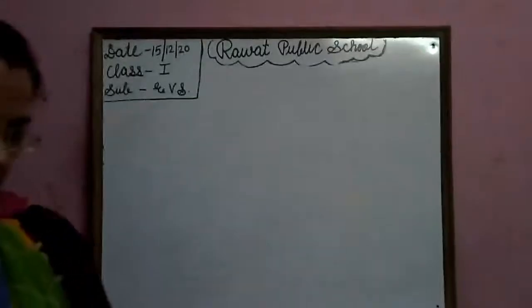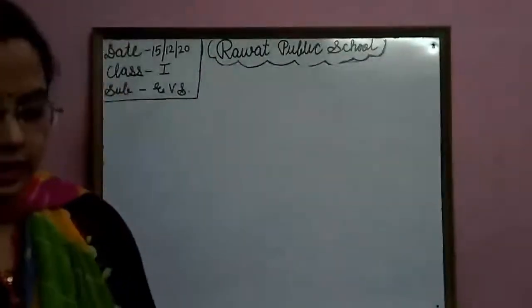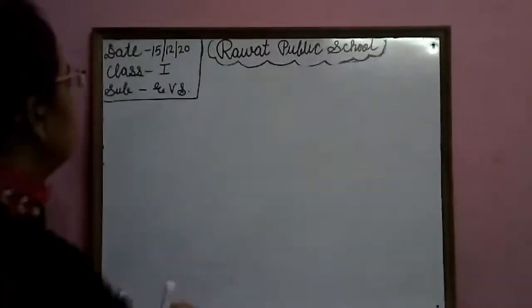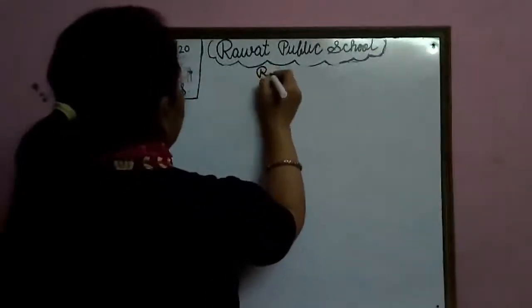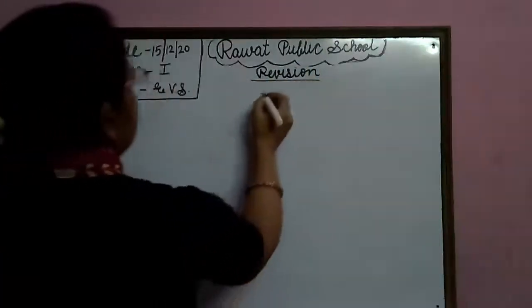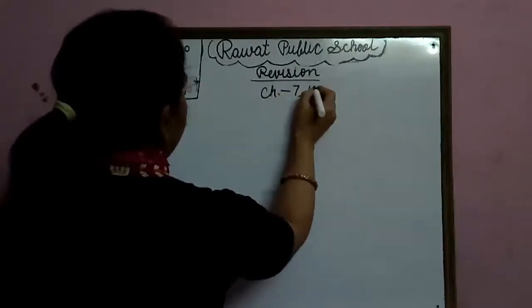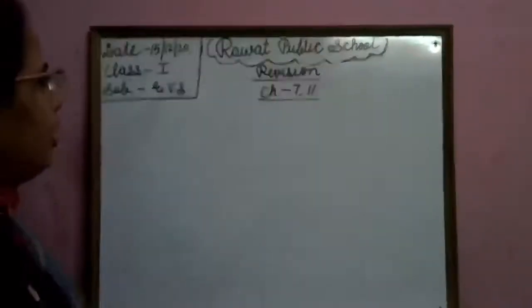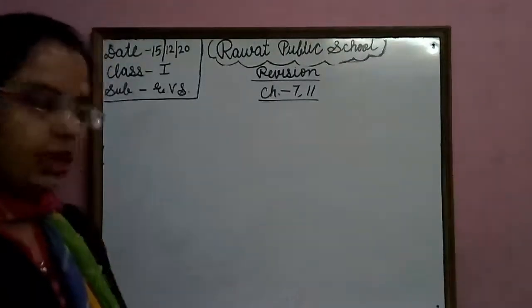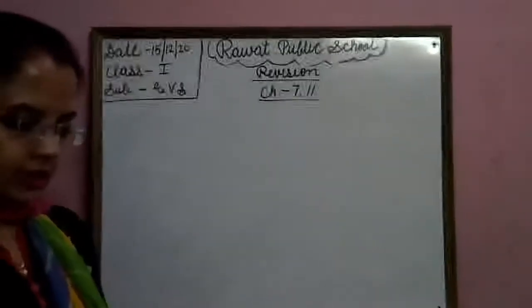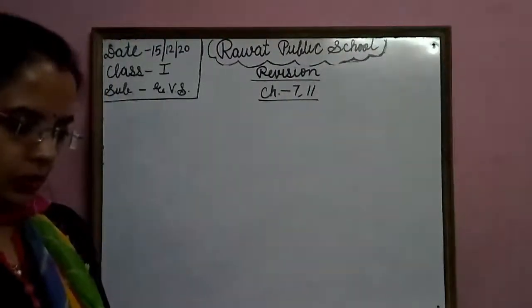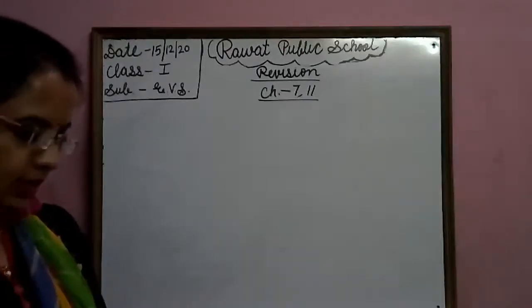Good morning class! How are you all? I hope you all are well. Now today children, we will do revision — revision of Chapter 7 and 11. Chapter 7 is 'Our Needs' and Chapter 11 is 'Plans.' So today we will do revision of these. Tomorrow we have our EVS third test, so you all need very good practice and preparation. Everyone will learn both chapters well.